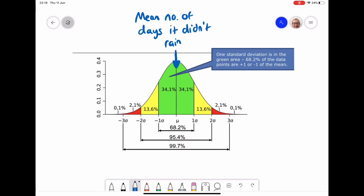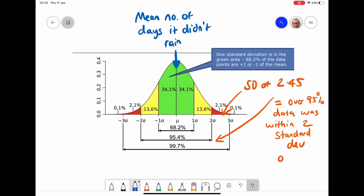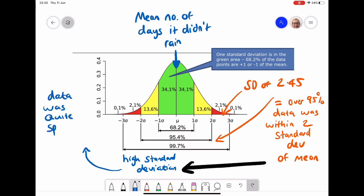We can look at that standard deviation score on what we call a bell curve, which is the normal distribution. I've put the mean showing that it was at six days that it didn't rain, that was our mean. We got a score of 2.4 in this standard deviation. What does that actually tell us? It says that over 95% of the data that we had was within two standard deviations of the mean. That means it's quite a high standard deviation from the mean, and that means the data that we had was quite spread out.